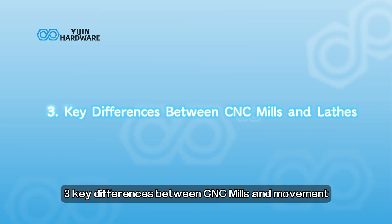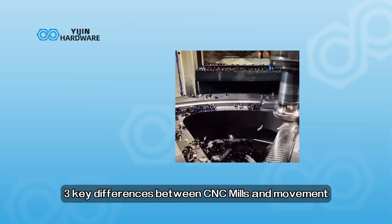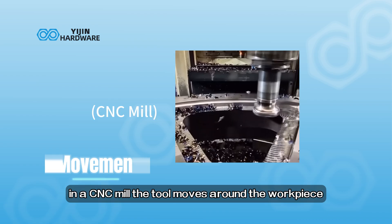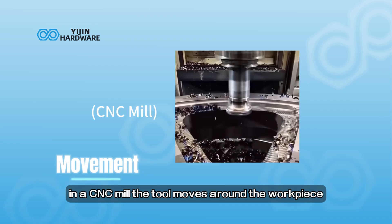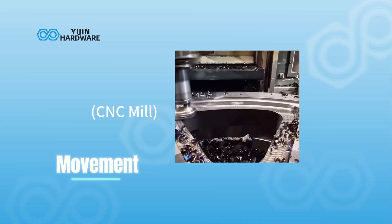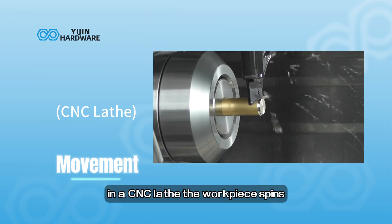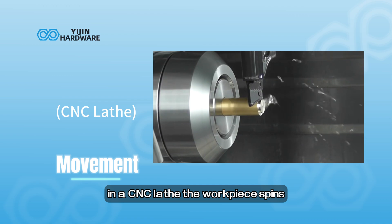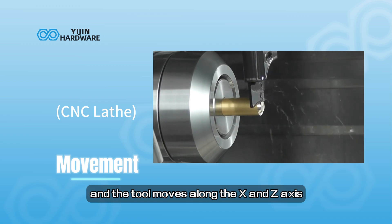Key differences between CNC mills and lathes — Movement. In a CNC mill, the tool moves around the workpiece. In a CNC lathe, the workpiece spins and the tool moves along the X and Z axes.